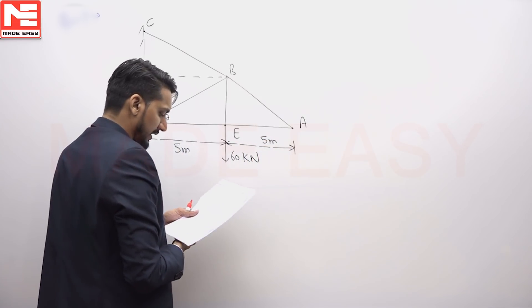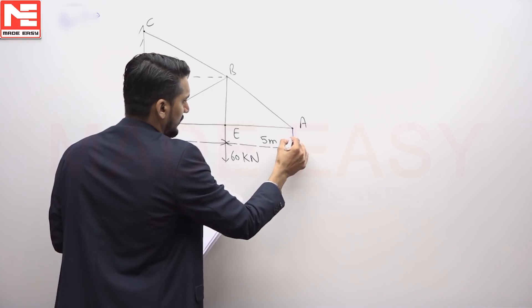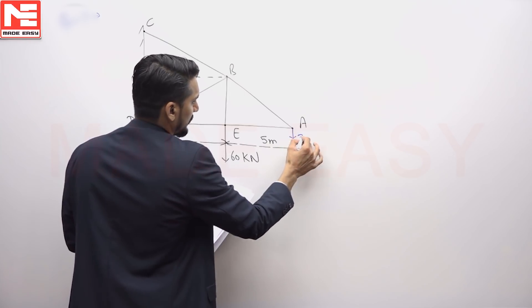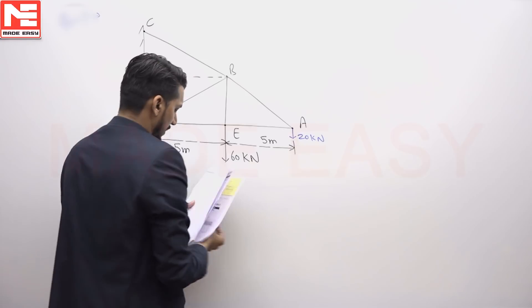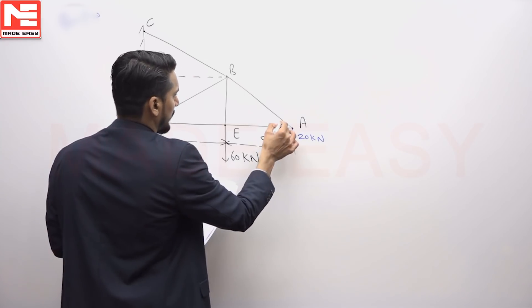There is one more force acting at A that is downward and its magnitude is 20 kN. This angle is theta given.